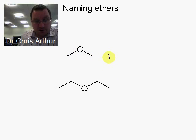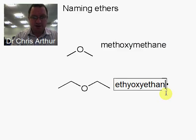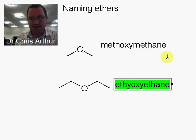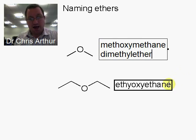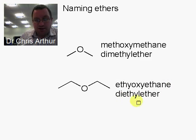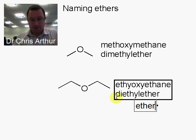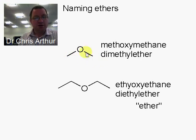We could call this methoxymethane, and this one ethoxyethane — they're still perfectly valid names. But nobody ever calls them that. It's much more common to see these as dimethyl ether and diethyl ether. You will almost certainly meet diethyl ether in the teaching labs, where you might actually see it just being called 'ether'. These are special cases where you have simple alkyl chains that are symmetric on the ether.